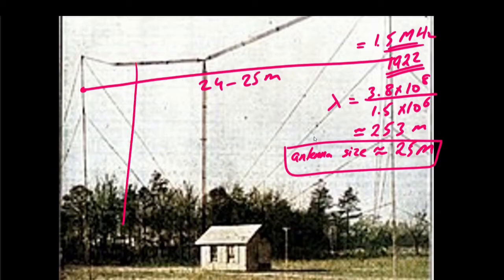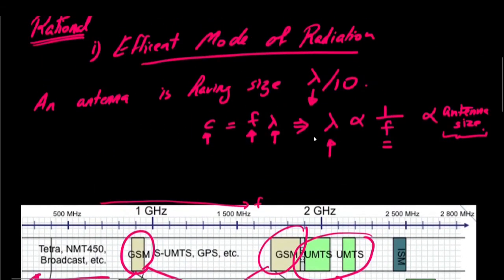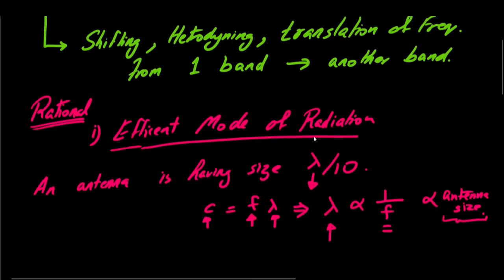Whereas this dimension, the height of it, was roughly 18 meters. So at low frequencies we have these big antennas, and as the frequencies increase we have smaller antennas which we can house in our emerging communication devices. This was the first application, that is efficient mode of radiation.